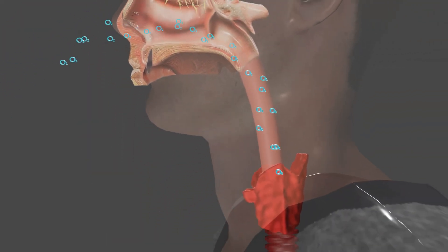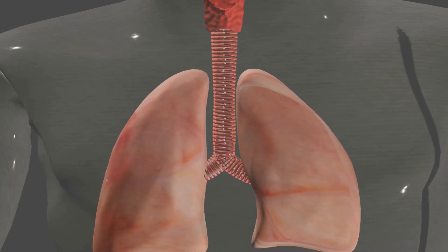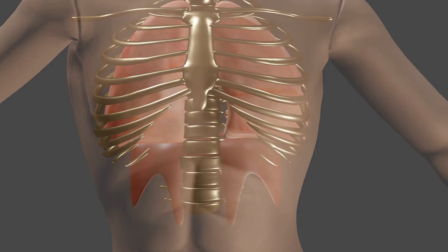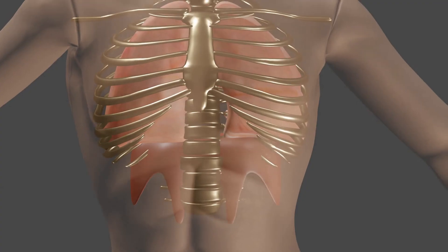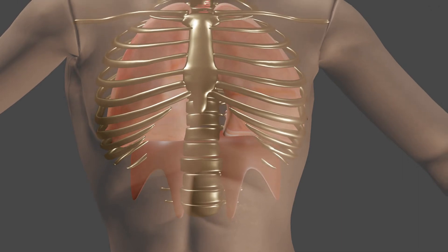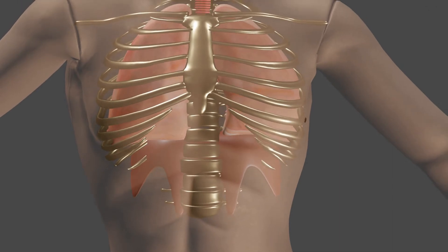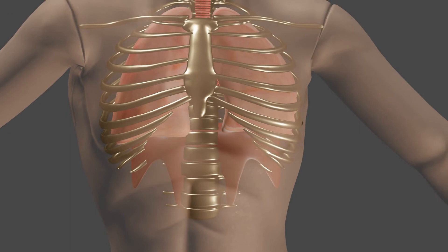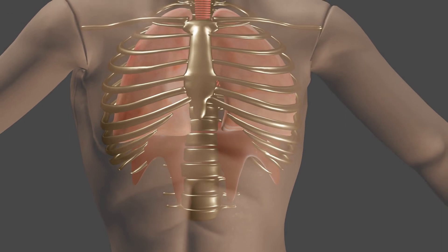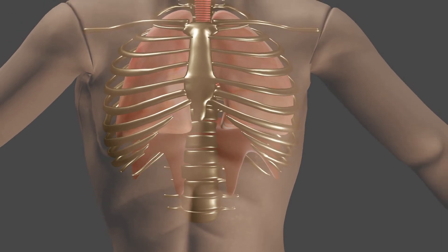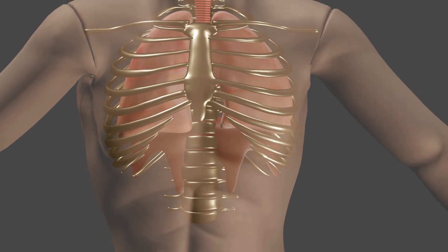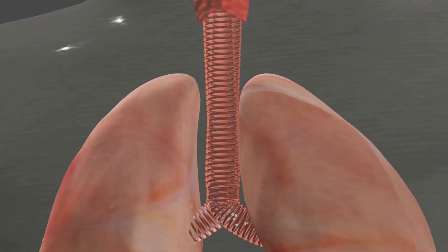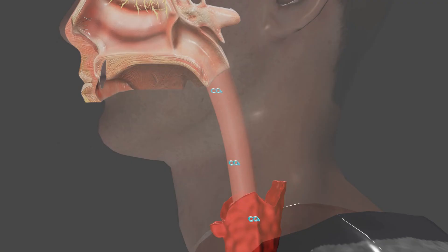During expiration, the ribs move downward and inward, reducing the space from the sides of the chest cavity. The muscles of the diaphragm also relax, becoming more dome-like. This reduction in the space of the chest cavity causes air to move out of the lungs, and this is expiration.